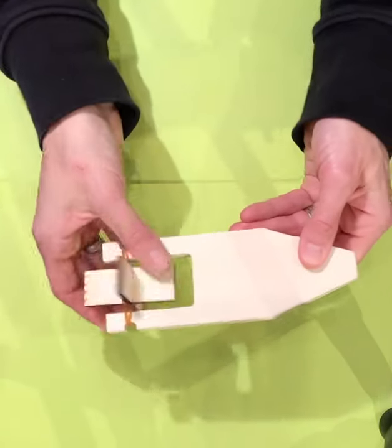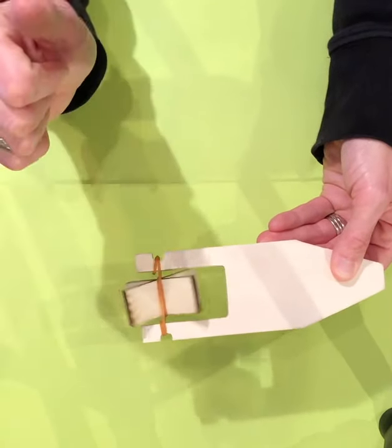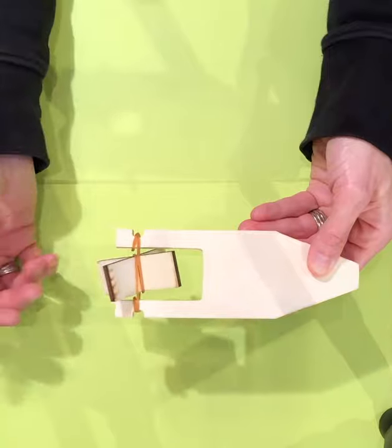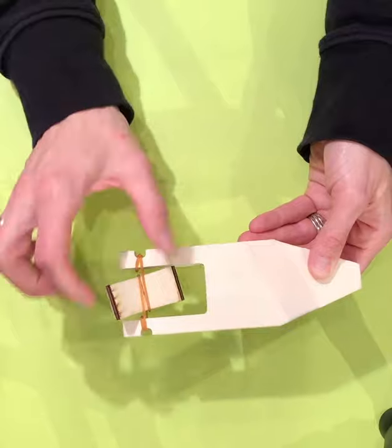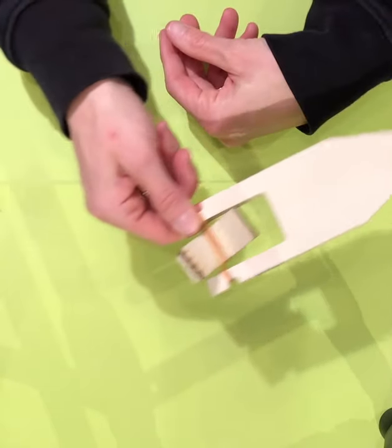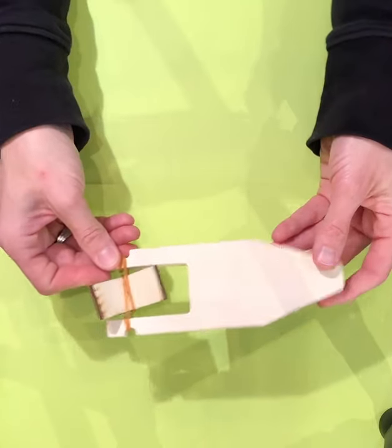I'm going to twist it again and let it go. You may need to adjust some of the rubber bands—my paddle is kind of a little crooked, so it's going to veer off to the left. But that's essentially it.